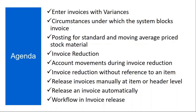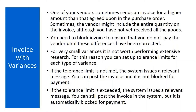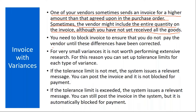These are the ones we will be covering in invoice blocking. First we'll start with entering invoices with variances. What happens is one of your vendors sometimes sends an invoice for a higher amount than that agreed upon in the purchase order. Sometimes the vendor might include the entire quantity on the invoice, although you have not yet received all the goods. In this kind of scenario, you need to block the invoice to ensure that you don't pay the vendor until these differences have been corrected. For very small variances, it is not worth performing extensive research.